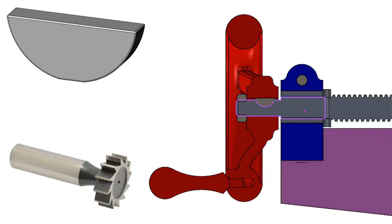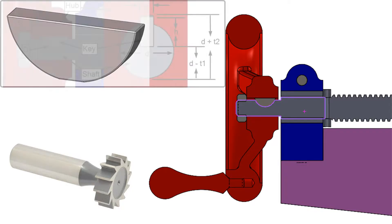The key seat is machined by plunging the correct size Woodruff cutter into the shaft to the required depth.